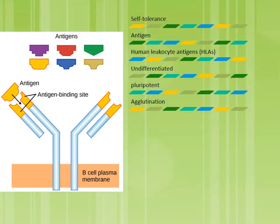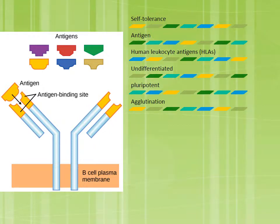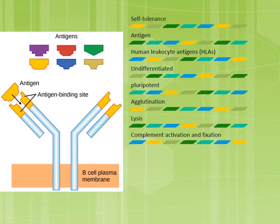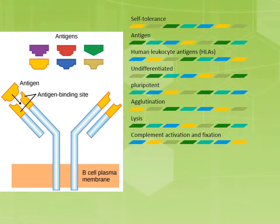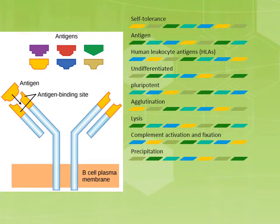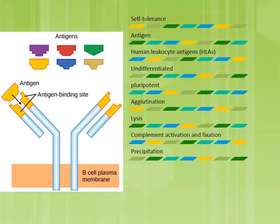Agglutination occurs during the antibody-binding process when antibodies link antigens together to form large and small immune complexes. Lysis is an immune response of destroying invading microorganisms by breaking the cell membrane. Complement activation and fixation are actions triggered by some classes of antibodies that can remove or destroy antigens.